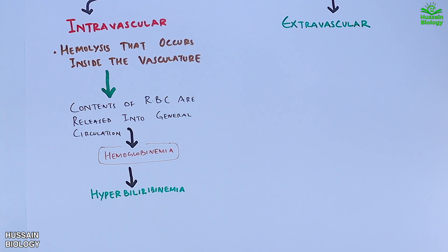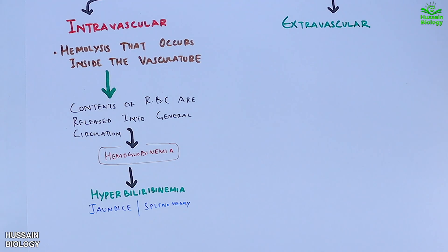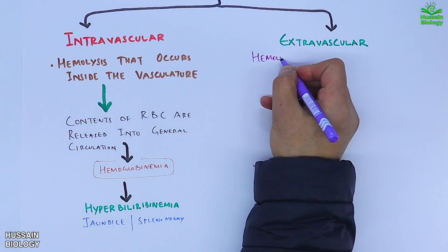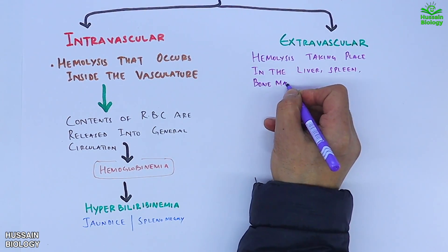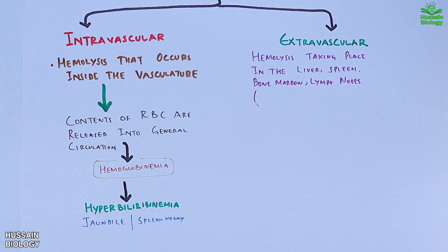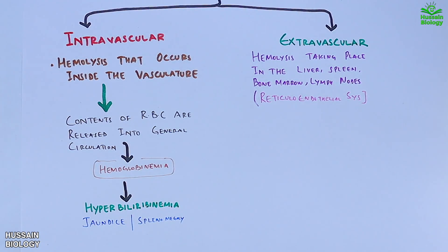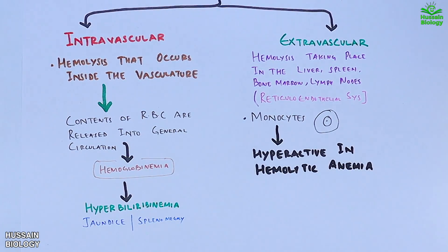Due to these conditions we also get jaundice and splenomegaly. On the other side, extravascular hemolysis takes place in the liver, spleen, bone marrow, and lymph nodes — typically involving the entire reticuloendothelial system. In this case we see a rise in monocytes, because monocytes are hyperactive in hemolytic anemia.